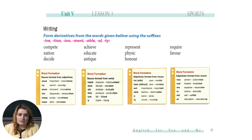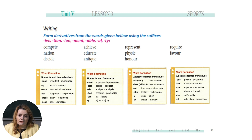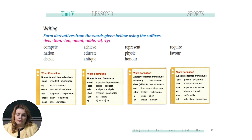Important — importance. Secret — secrecy. Innocent — innocence. Desperate — desperation. Lonely — loneliness. Dark — darkness. Improve — improvement. Decide — decision. Analyze — analysis (note: 'analyze' is the verb, 'analysis' is the noun). Produce — production. Fail — failure. Injure — injury. Care — careful. Care — careless ('less' means without — it's an antonym). Importance — important. Fashion — fashionable. Spice — spicy. Month — monthly. Poison — poisonous. Theater — theatrical. Expense — expensive. Drama — dramatic. Self — selfish. Education — educational.